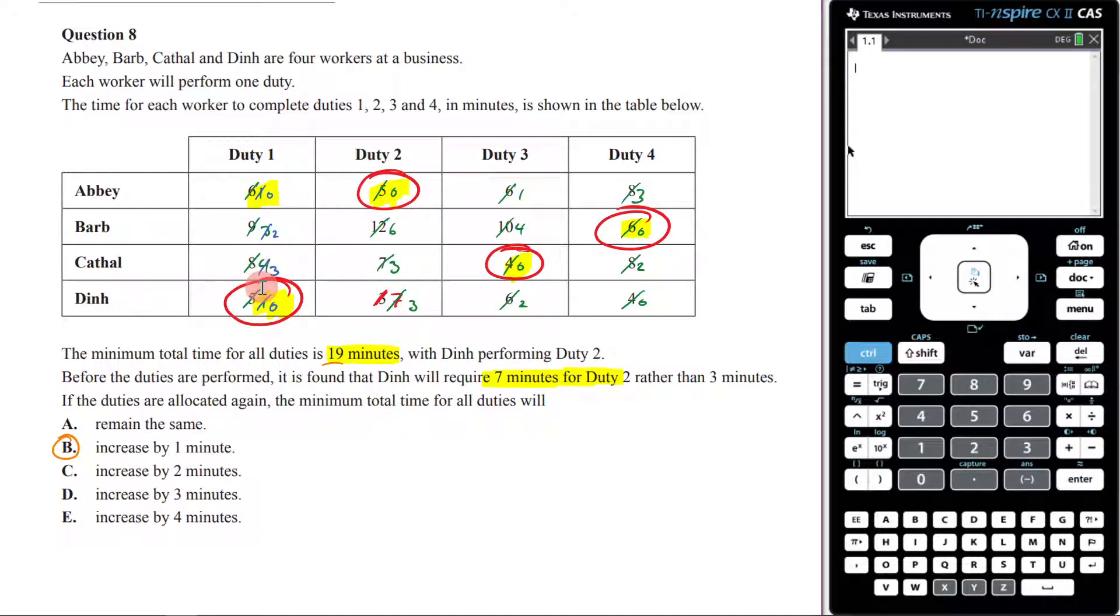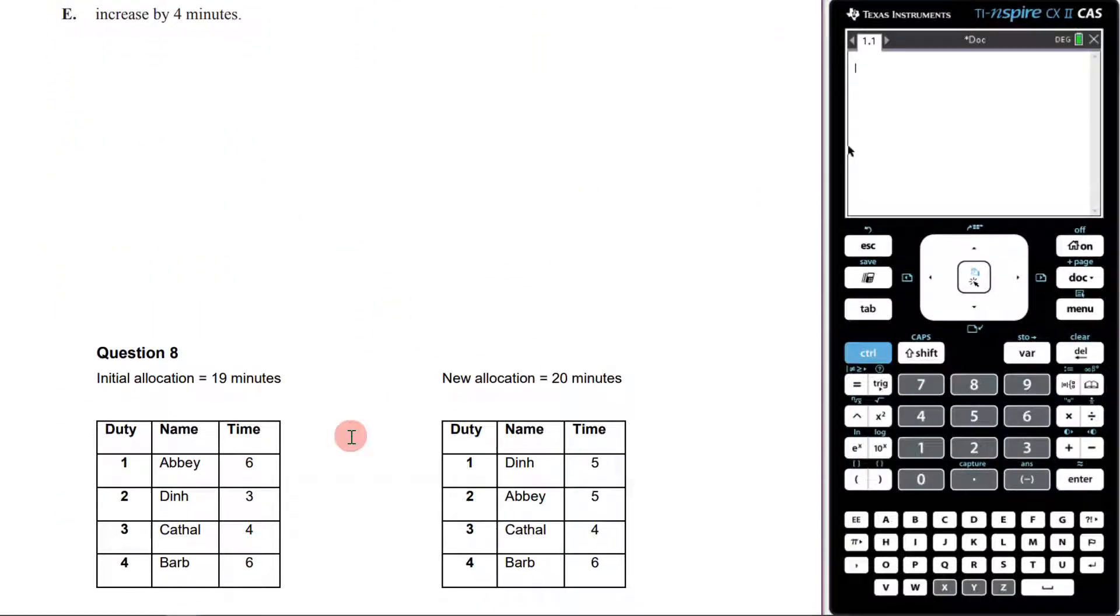Then we could just add up the numbers that we see beneath them. So like 5 plus 5 is 10, plus 4 is 14, plus 6 is 20. Remember we started with 19, now it's gone to 20 minutes. We've added one minute. So B is my answer. So my inspection method at the very beginning did pay off, but there you go, we've just proved it to ourselves.